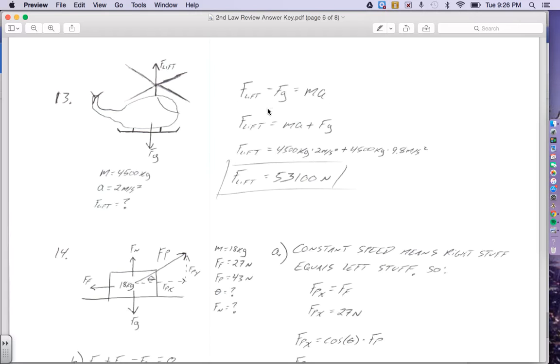Now we're trying to solve for force of lift, so a little algebra tells us we just have to add gravity over to the right, and force of lift equals M A plus force of gravity. Mass is 4,500 kilograms, A was given at 2 meters per second squared, and force of gravity is M times G, which is 9.8. So that tells us that the force of lift has to be 53,100 newtons.